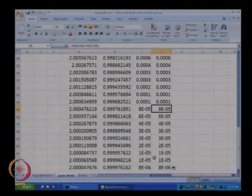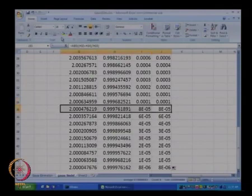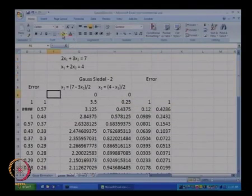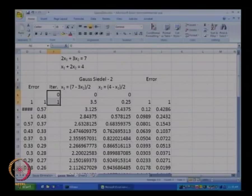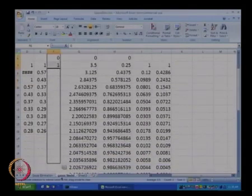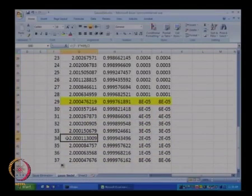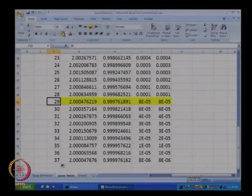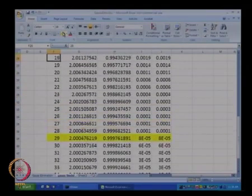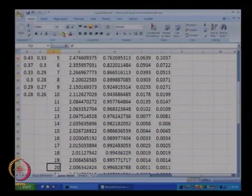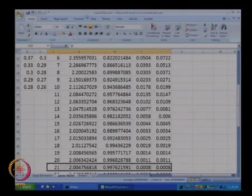Let us see the number of iterations that are required. This is the initial guess, so that is the zeroes iteration, this is the first iteration. I will just drag this and we require 29 iterations if the error tolerance is 10 to the power minus 4 and if the error tolerance is 10 to the power minus 3, we require 21 iterations.